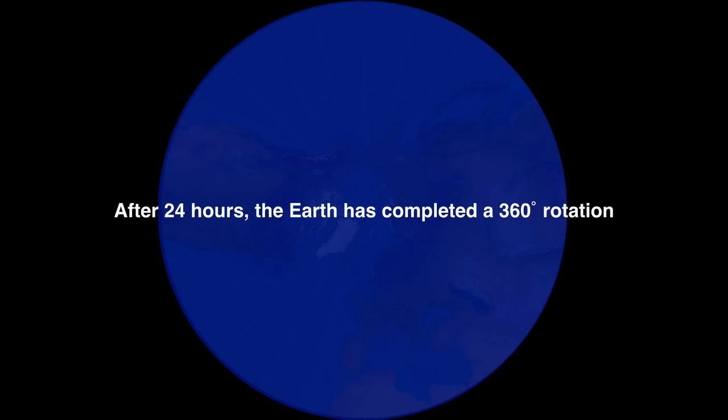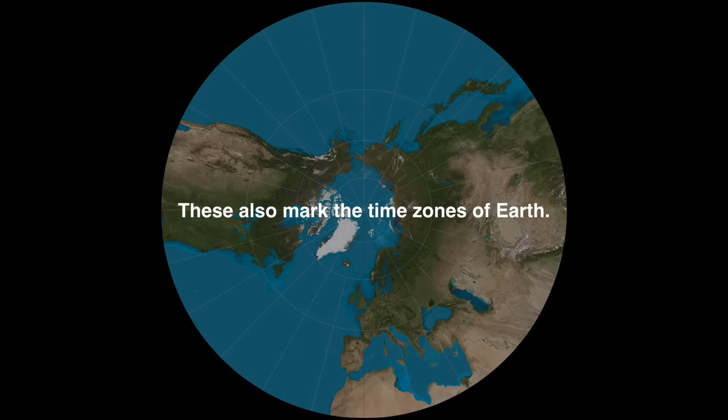To help us mark each hour, we use lines of longitude. They are imaginary, but there are 24 of them, so they mark the hours that occur in the day. They also tell us our time zones. This is not by coincidence — this was agreed upon by the countries to make this marker help us determine what time it is on Earth.